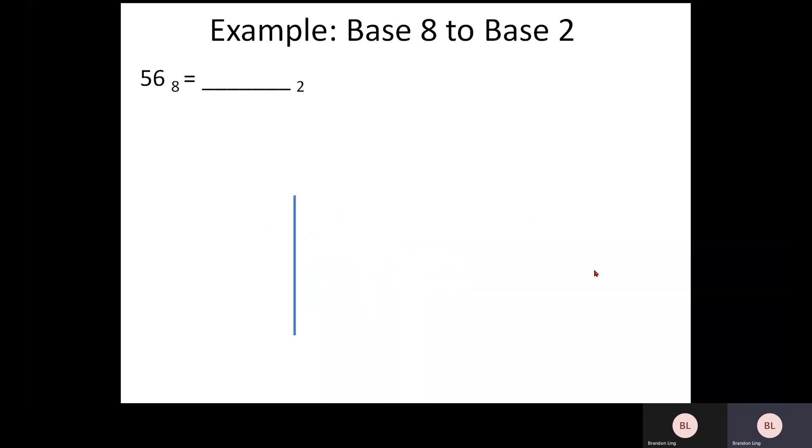Okay, next we move on to conversion of base 8 to base 2. How do we do that? Okay, for this case, here we use the previous example, which is 56 here. Okay, now when you have base 8, each number consists of 1 bar. Okay, so you separate each number using a bar here.